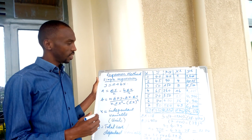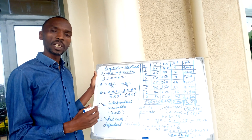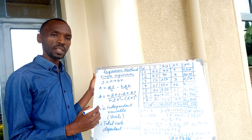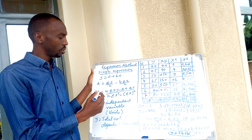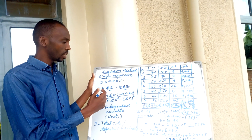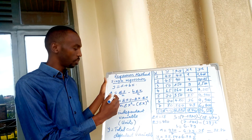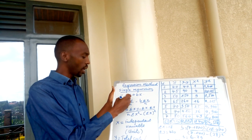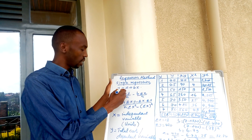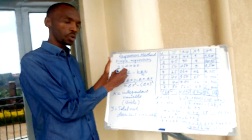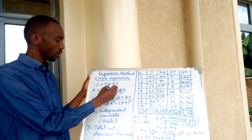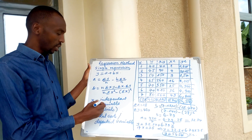Good morning, dear students of management accounting. We are still demonstrating the cost estimation method. Here is an illustration on how to use regression to determine total costs in management accounting. We will start with simple regression where our equation is y equals a plus bx. Y is the total cost, a is the constant, b is a coefficient that determines the variation or variable costs, and x is our independent variable.